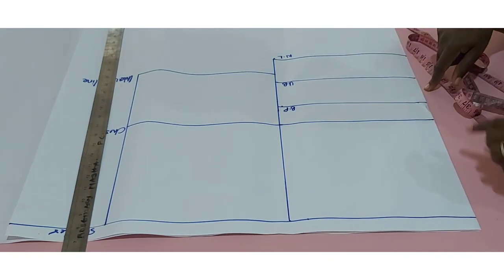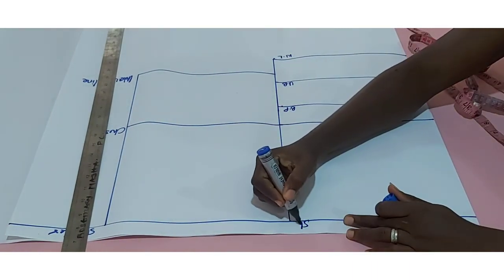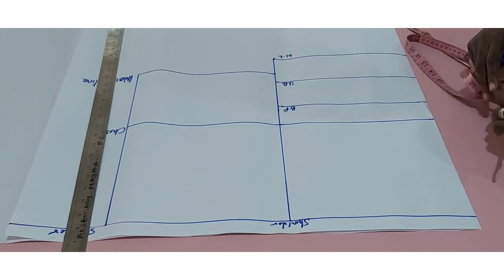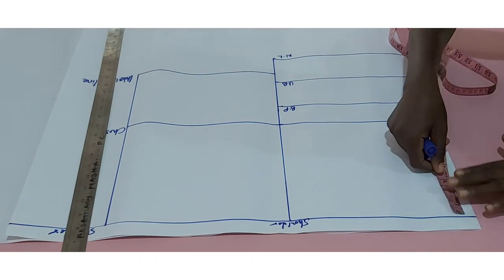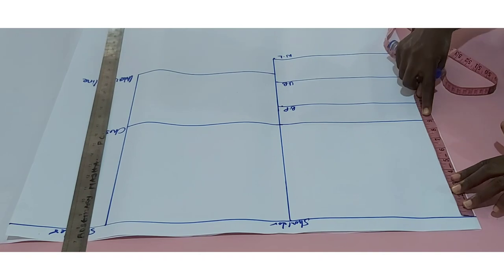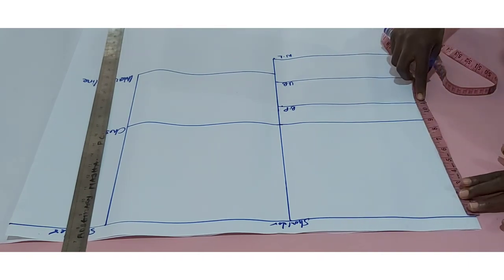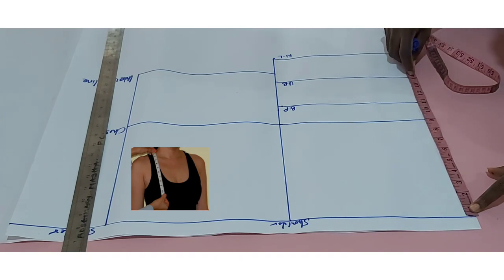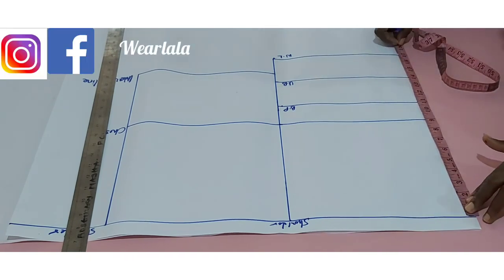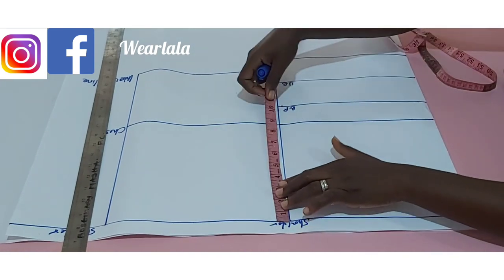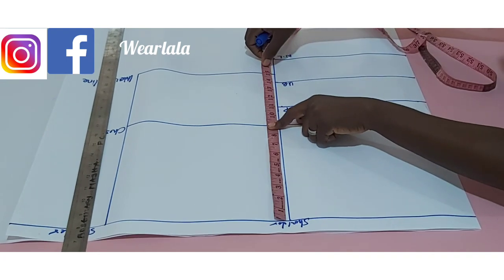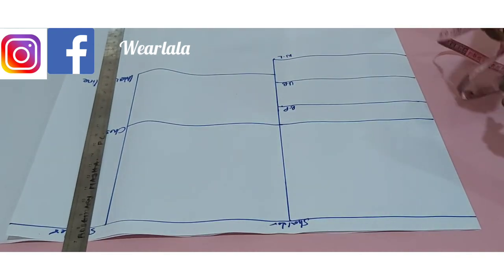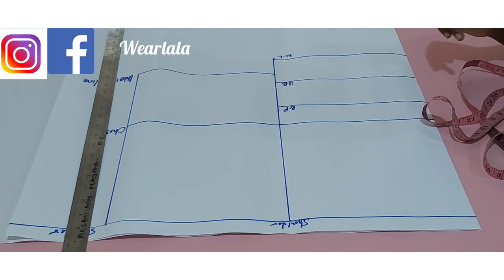The difference in my front and back waist length is two inches. This is my shoulder line, my chest line, and for the front we have additional lines. My back waist length is 15 inches, so the difference is two inches between front and back. On average, most people have a two-inch difference between their front and back waist length; for small sizes it could be one inch.